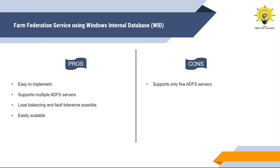This type of deployment is easy to expand, meaning we can add more servers to our farm. However, it supports only five ADFS servers — we cannot install more than five. Another disadvantage is that we can create only 100 relying party trusts within the ADFS server. If we create more than 100 relying party trusts, it will not accept it. Also, any changes must be made on the primary ADFS server, as secondary servers hold a read-only copy of the database.